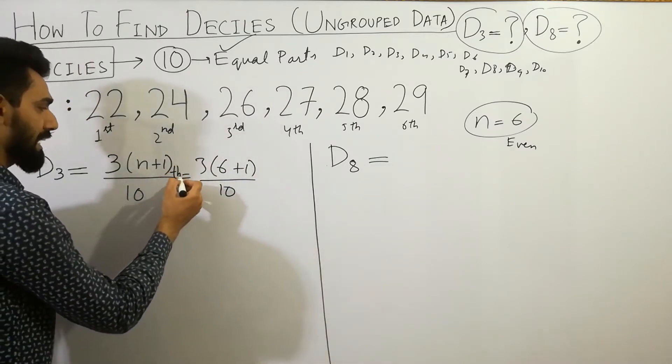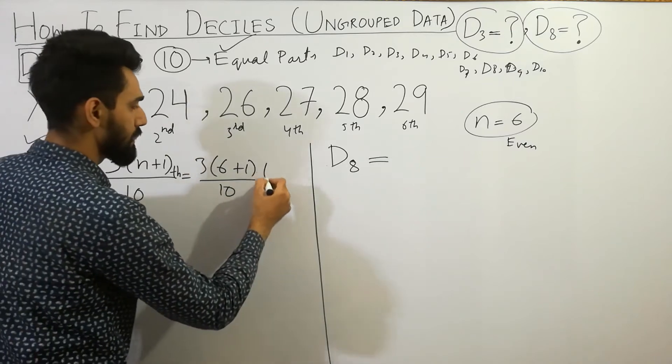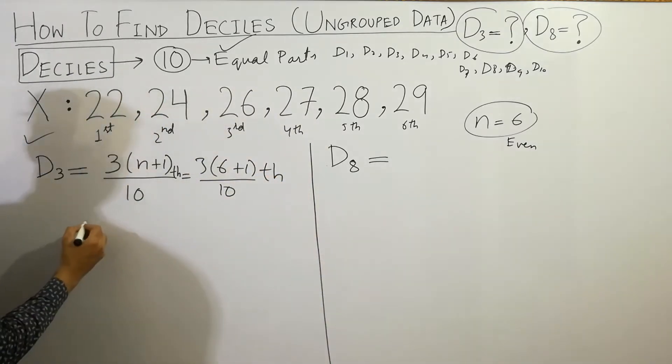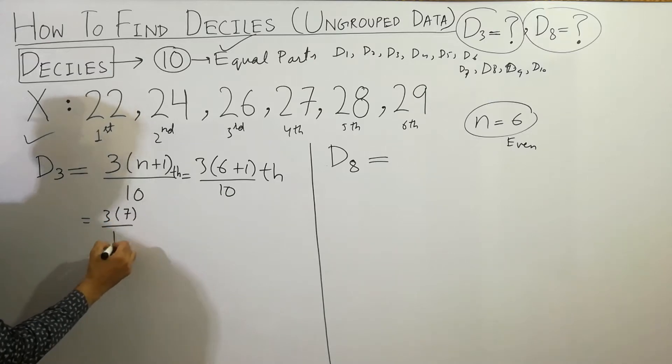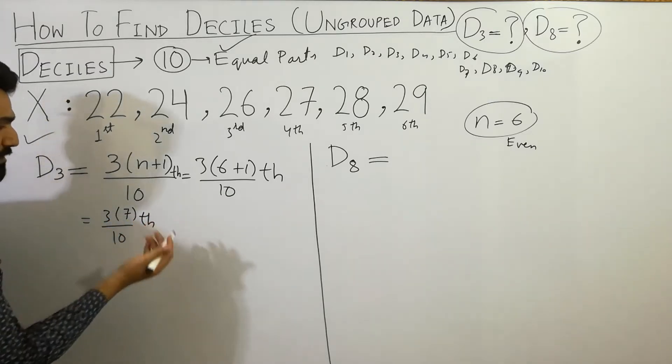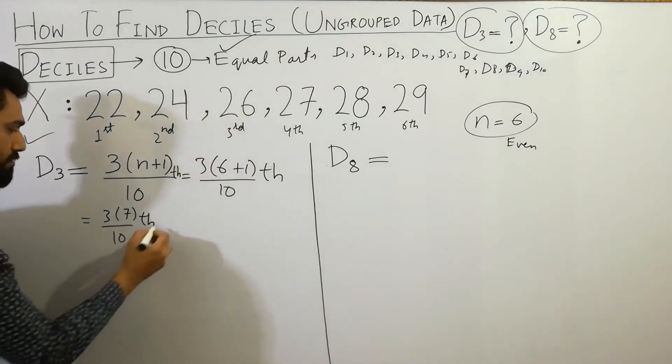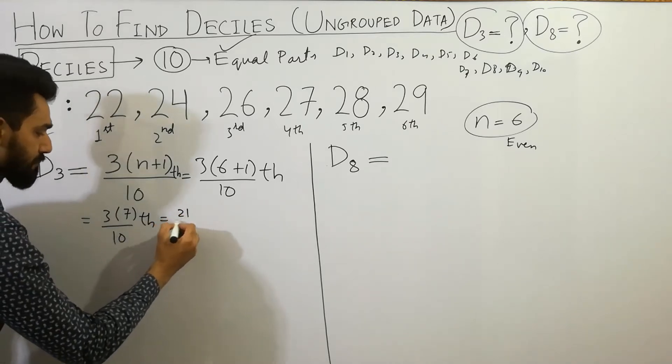Th is equal to 3 bracket 6 plus 1 will be 7 divided by 10, divided by 10. Th, this is term. So 21 over 10 th is equal to 2.1 th.